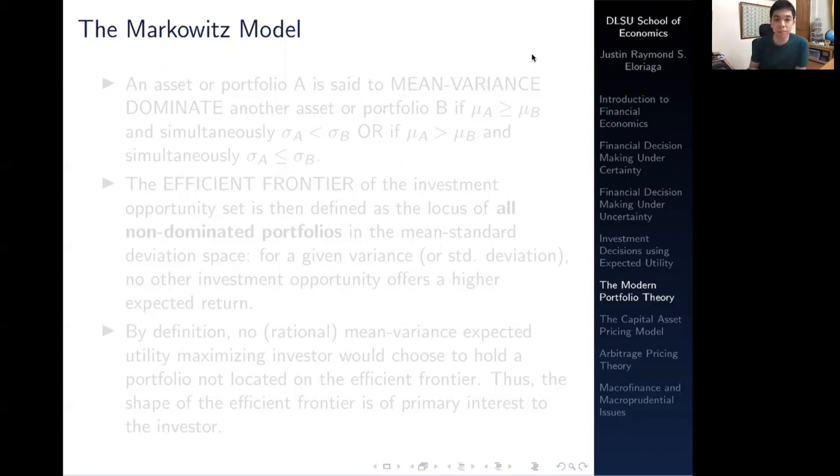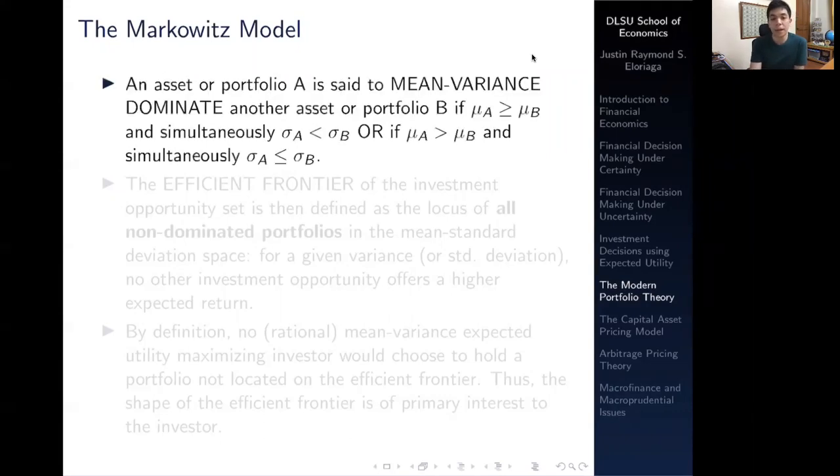The Markowitz model starts with mean-variance dominance. An asset or portfolio A is said to mean-variance dominate another asset or portfolio B if you can have one of two conditions. The first is if the expected return of portfolio A is greater than or equal to the expected return of portfolio B, and simultaneously the variance of asset A is strictly less than B, then portfolio A is mean-variance dominant to portfolio B.